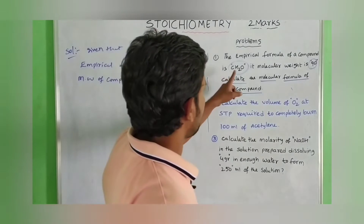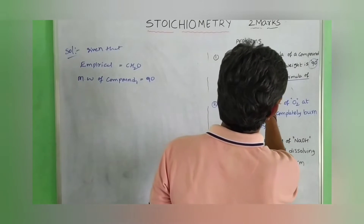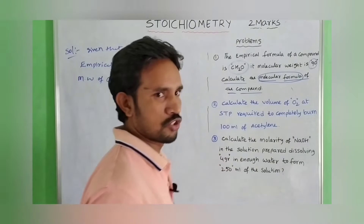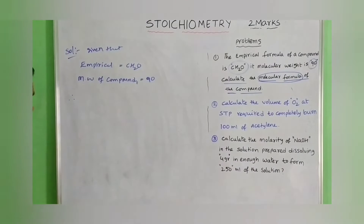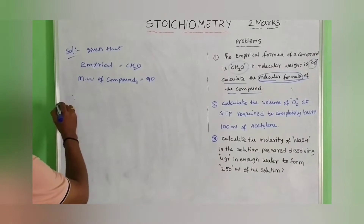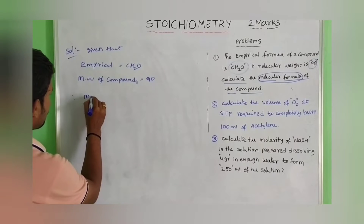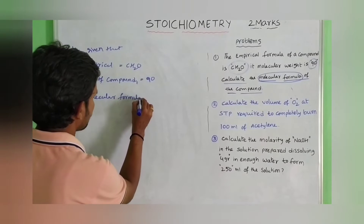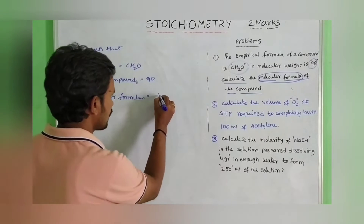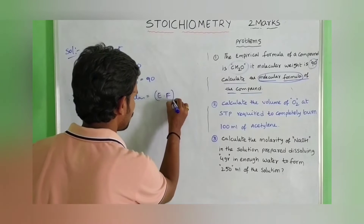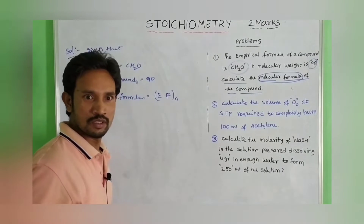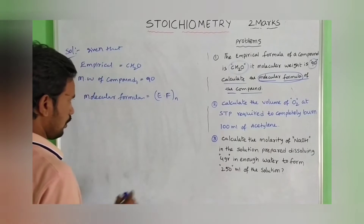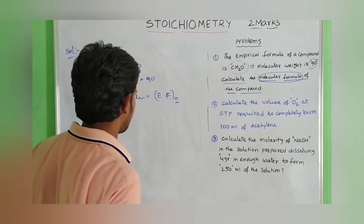Now we have to calculate the molecular formula. The formula is: molecular formula = empirical formula × N, where N equals molecular weight of compound divided by molecular weight of empirical formula.